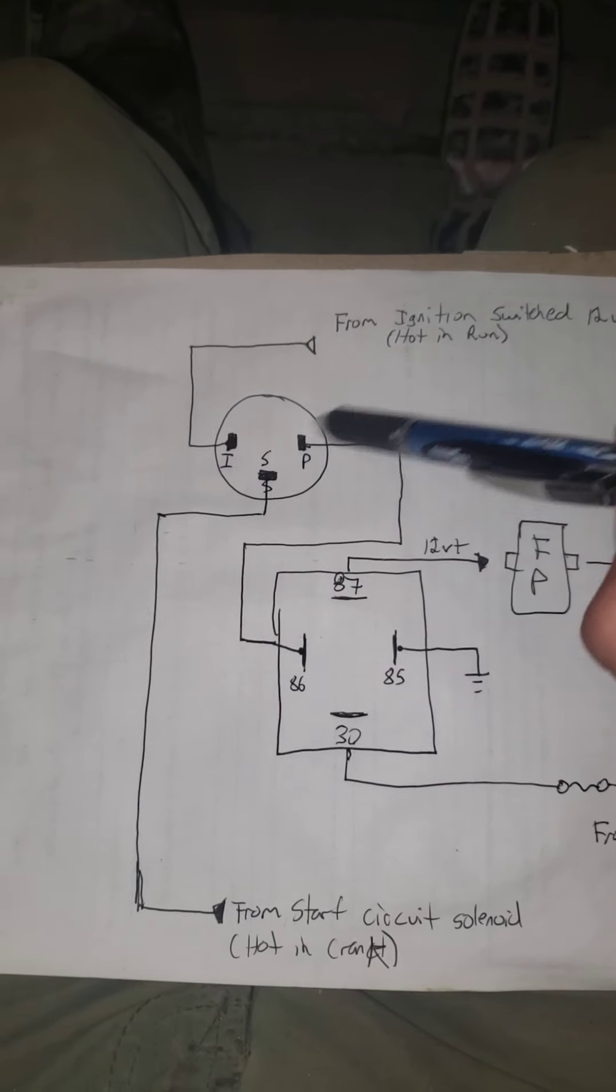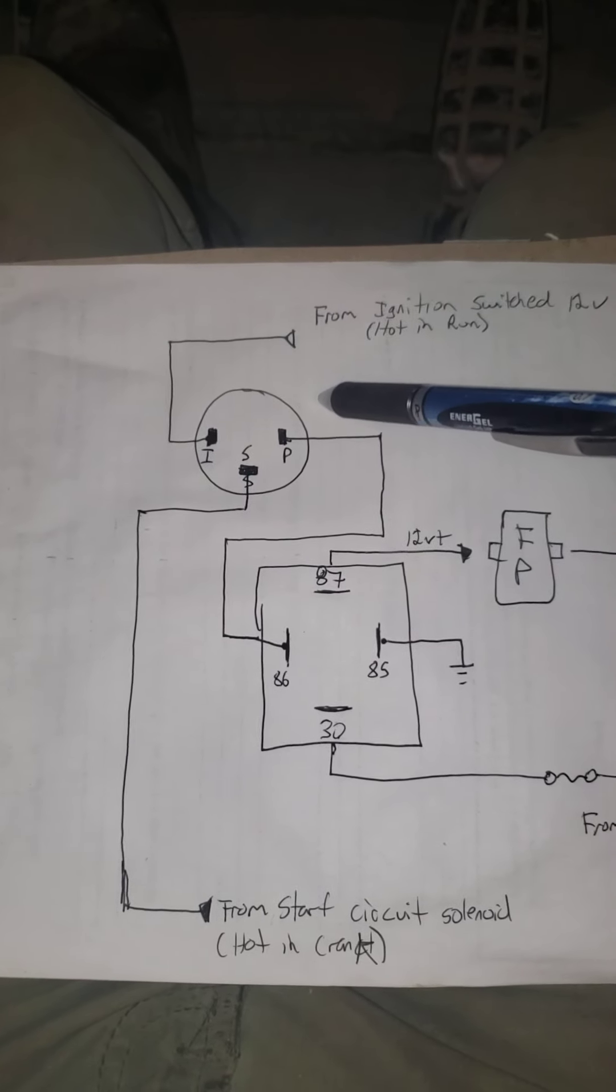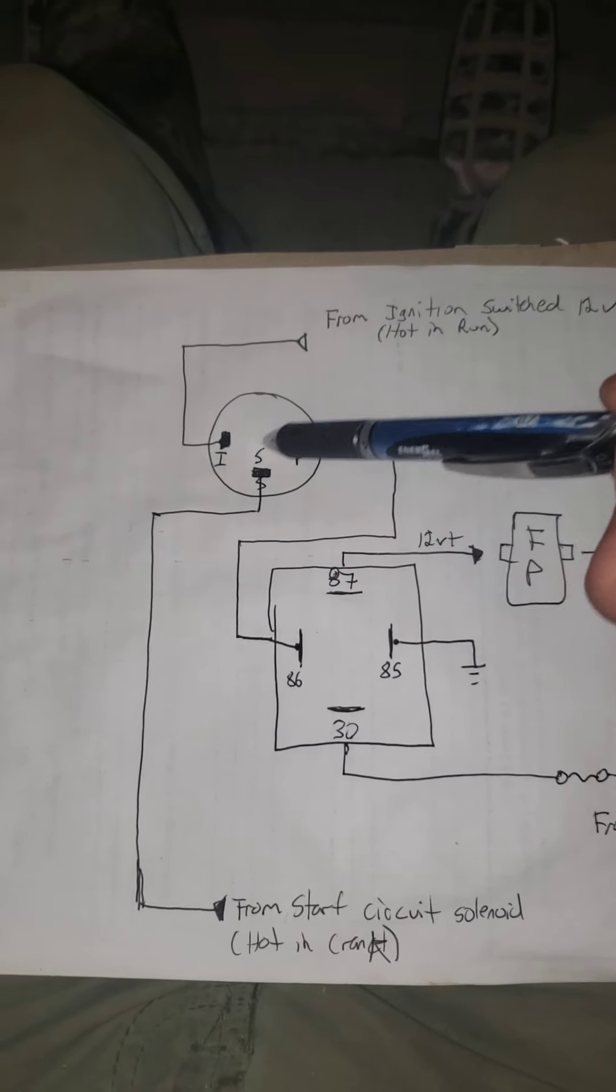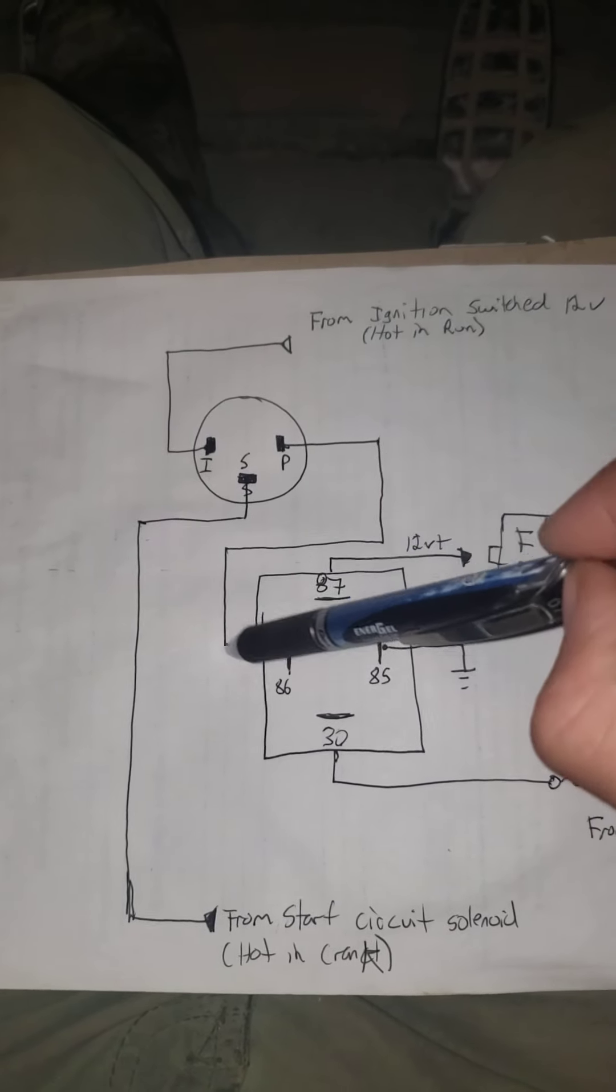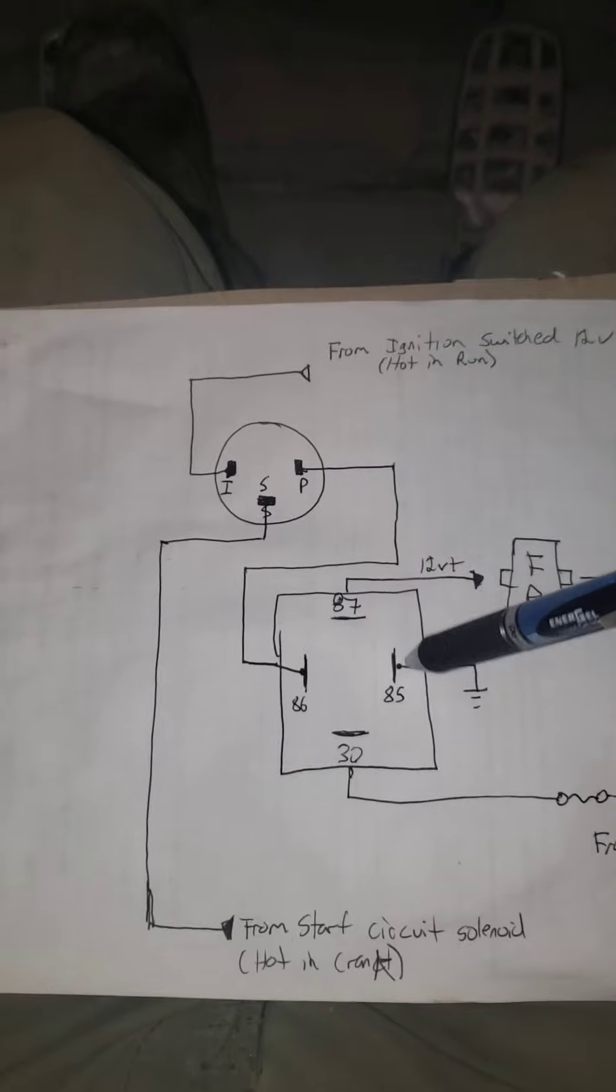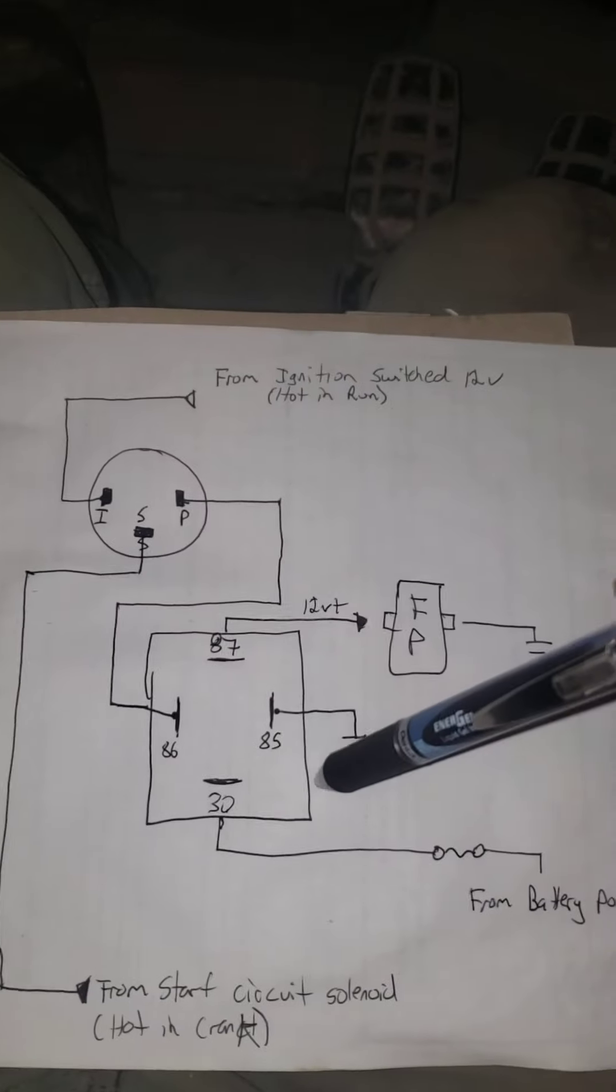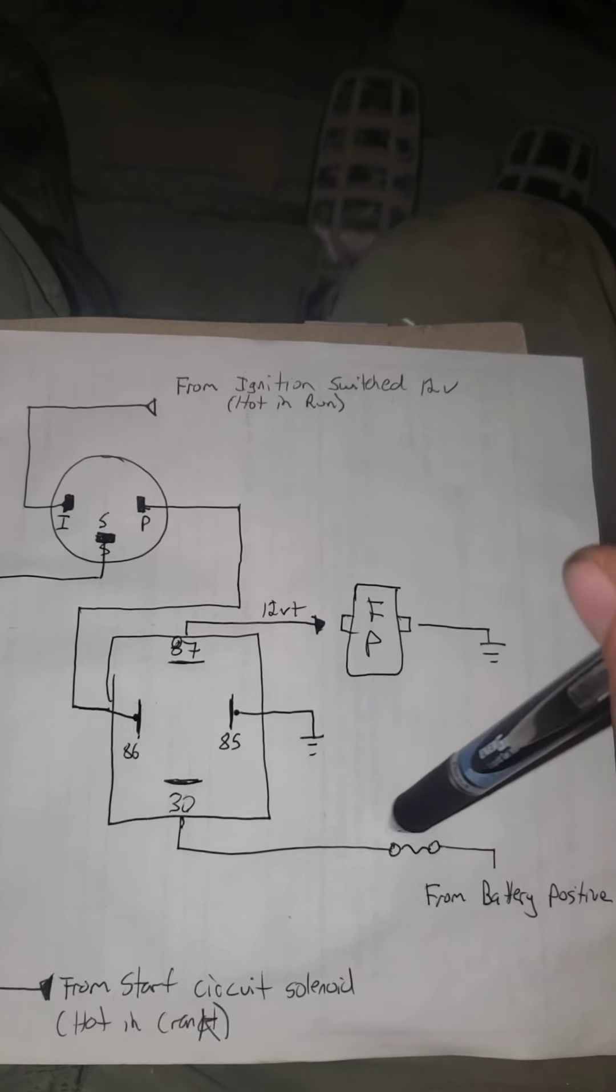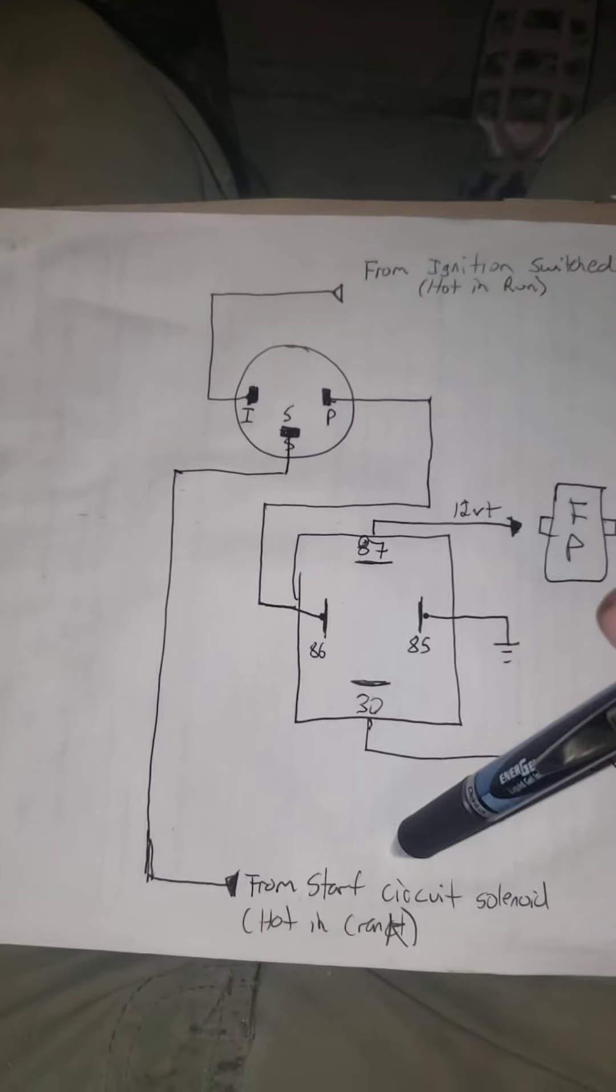and now current would go through this wire, jump around the sensor, or the switch here, the oil pressure switch. It would jump around it, come in through here to your actuating circuit on your relay, which would prime, which would allow your fuel pump to run while your engine was off, without having to use the starting circuit off the solenoid.